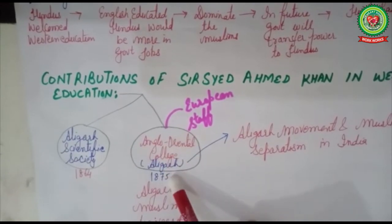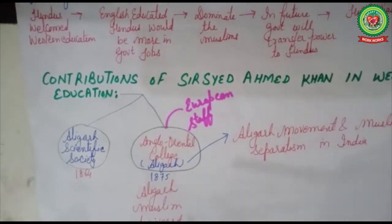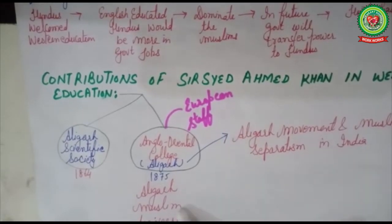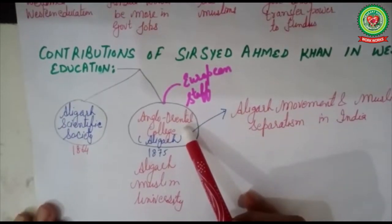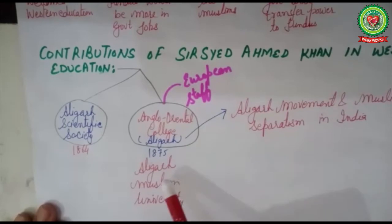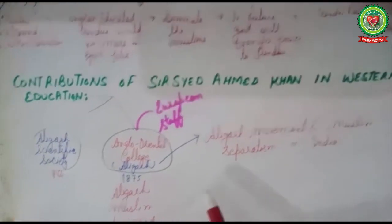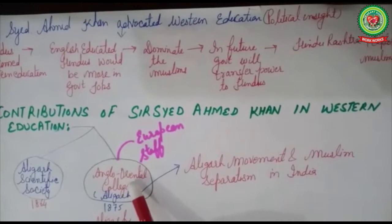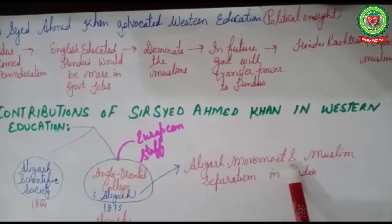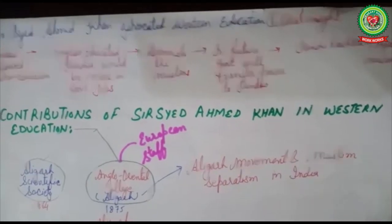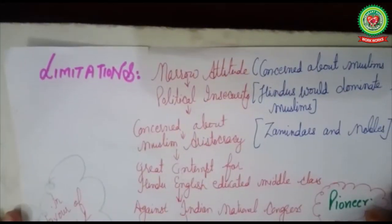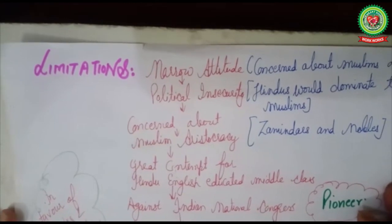At present, the Anglo-Oriental College has developed into a leading university — Aligarh Muslim University — particularly known for medical sciences. Slowly the campus of Anglo-Oriental College developed into a political arena, and the Aligarh movement and Muslim separatism in India developed there. No doubt Sir Syed Ahmad Khan asked Muslims to take western education and promoted some reforms, but there were drawbacks to his contributions.